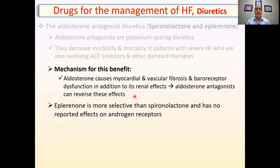Eplerenone is more selective for the mineralocorticoid receptor, which is what we want to block. Spironolactone, unfortunately, can bind to the mineralocorticoid receptor — which is okay — but it also binds to androgen receptors, causing impotence, gynecomastia, and other side effects. So eplerenone is preferred.